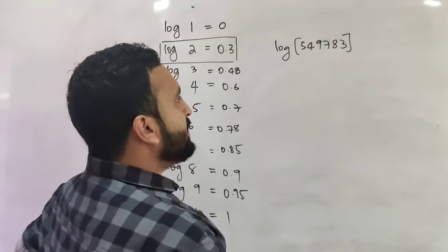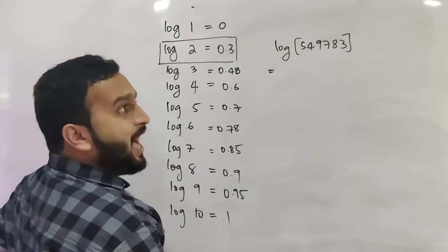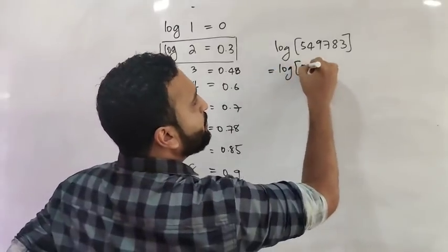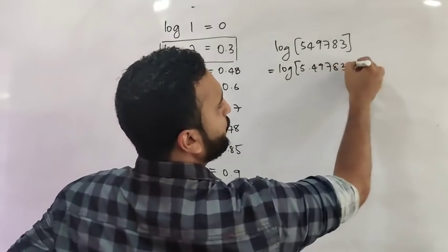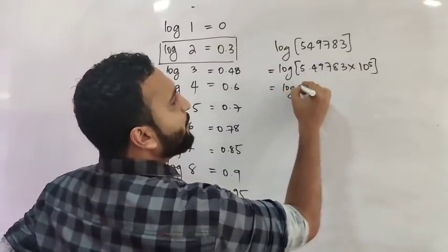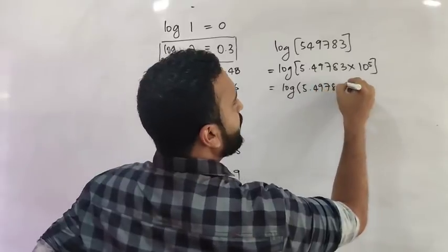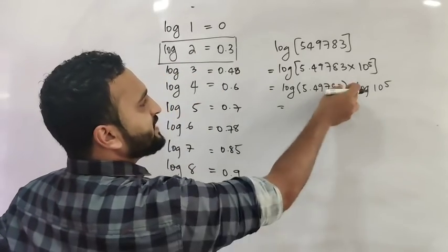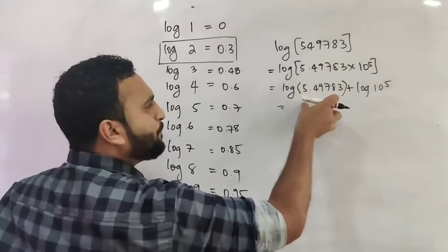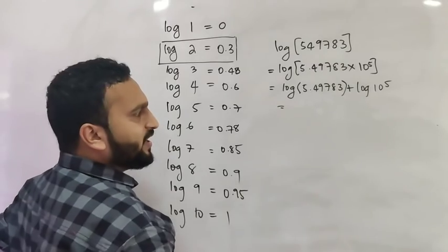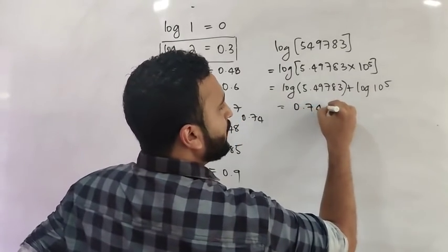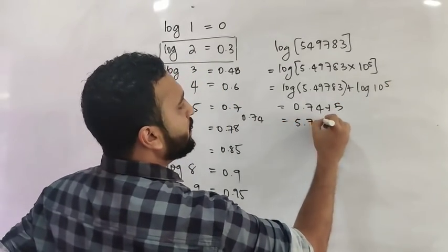For a number like 5.49783 × 10⁵, using log of a into b equals log a plus log b, we get log(5.49783) plus log(10⁵). Log of 5.49783 is approximately log of 5.5, which is around 0.74. Log of 10⁵ is 5. So the answer is approximately 5.74, which matches the calculator value exactly.